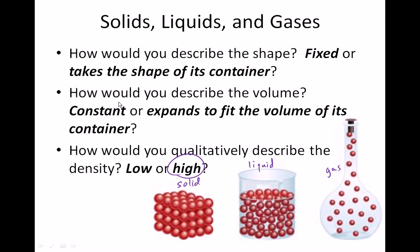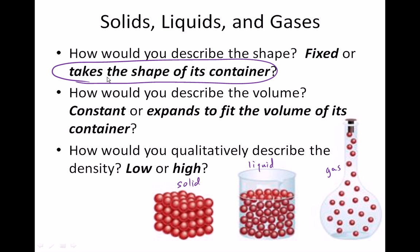Now let's redo those questions for a liquid. The shape is going to depend on what container it's in. If I put liquid from a beaker into a fish tank, the shape of that liquid changes to the shape of the fish tank. Its volume, however, is constant — 50 milliliters measured in a graduated cylinder is still 50 milliliters when poured into a differently shaped beaker. The density is still pretty high because compared to a gas, those particles are still very close together — almost much closer to a solid than to a gas.